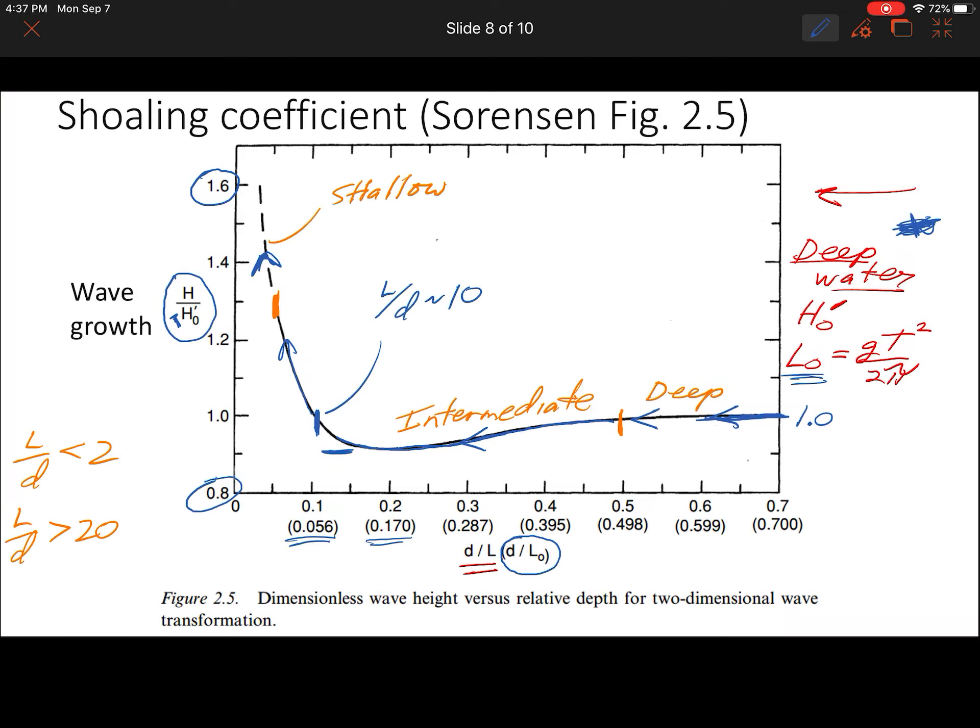Closer to the shore is going to have a different value of d over L0. The numbers in parentheses here are values of d over L0, not d over L. These ones are d over L, and these ones are d over L0.